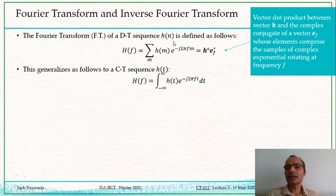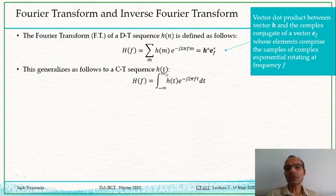In discrete time, this is simply the dot product as indicated here. This circle represents the dot product of vector h with the conjugate of e(f), and when you go to continuous time the dot product gets replaced by an integral. The complex conjugation operation is the reason why there is a minus sign in front of the exponent.